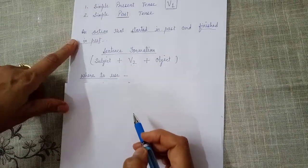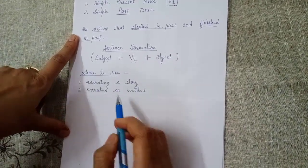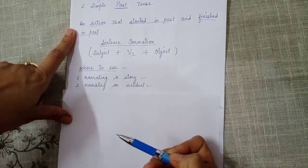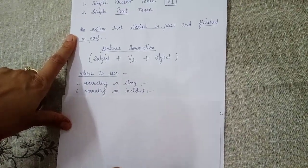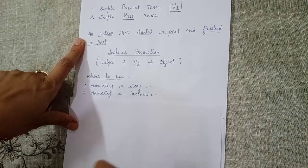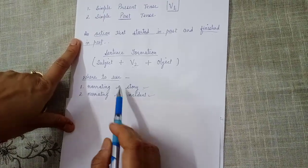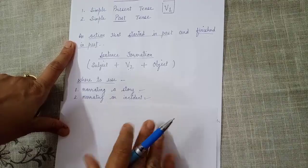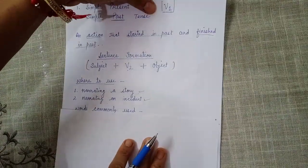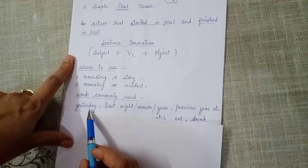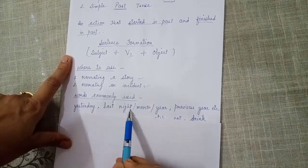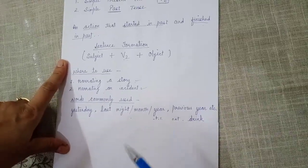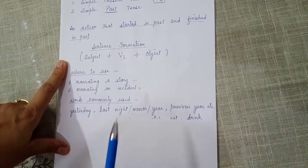Where is this tense used? While narrating a story or while narrating an incident — something that happens in your life, like yesterday you were going to school and you saw something on the road and you are going to narrate that to your friend — you will be using this tense. Generally there are some words used with this tense at the end of the sentence: yesterday, last night, last month, last year, previous year, etc.